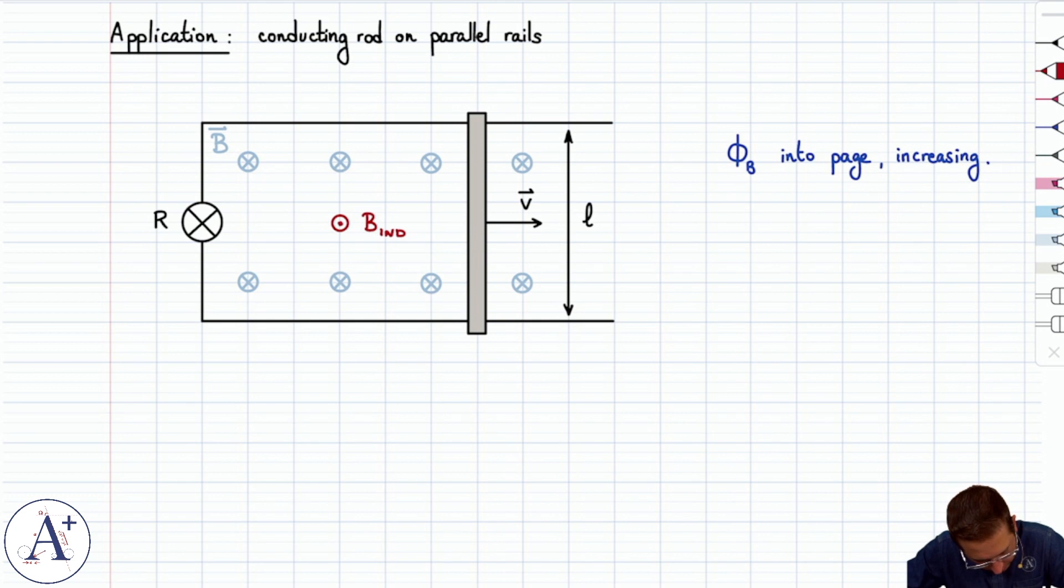And the only way that you get B-induced pointing out of the page by the right-hand rule is if I-induced, the induced current, flows around this circuit here counterclockwise. And so through the conducting rod here, you're going to get I-induced going up through the rod. It gives you B-induced pointing out of the page, and that's consistent with Lenz's law. Fair enough. So there is an induced current. Let's try to quantify its magnitude.